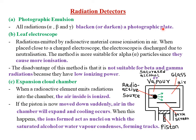The second type of radiation detector is what we call the leaf electroscope. Radiations emitted by radioactive material usually cause ionization in the air. Ionization is simply charging the air such that some particles of air will be charged positively, whereas others will be charged negatively to form electrons. So when placed close to a charged electroscope, the electroscope is discharged due to neutralization.